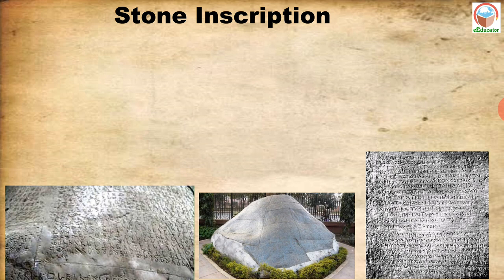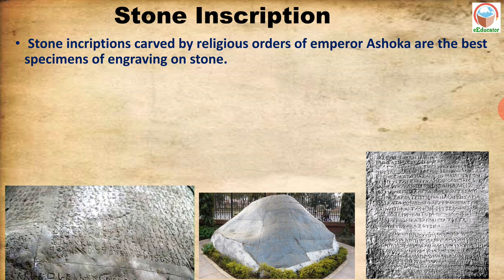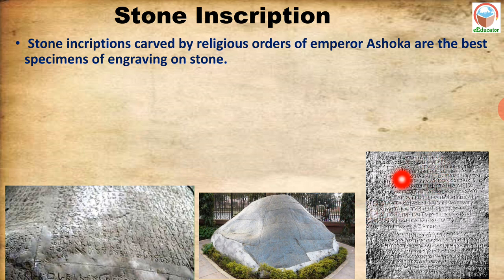Next are Stone Inscriptions. To inscribe on a stone means to write on a stone using a chisel or hammer. Stone inscriptions were carved by religious orders of emperors, conveying certain religious messages to the people. These were placed in different parts of the empire so that messages could be spread to the public. Ashoka's stone inscriptions are the best specimens of engraving on stone.